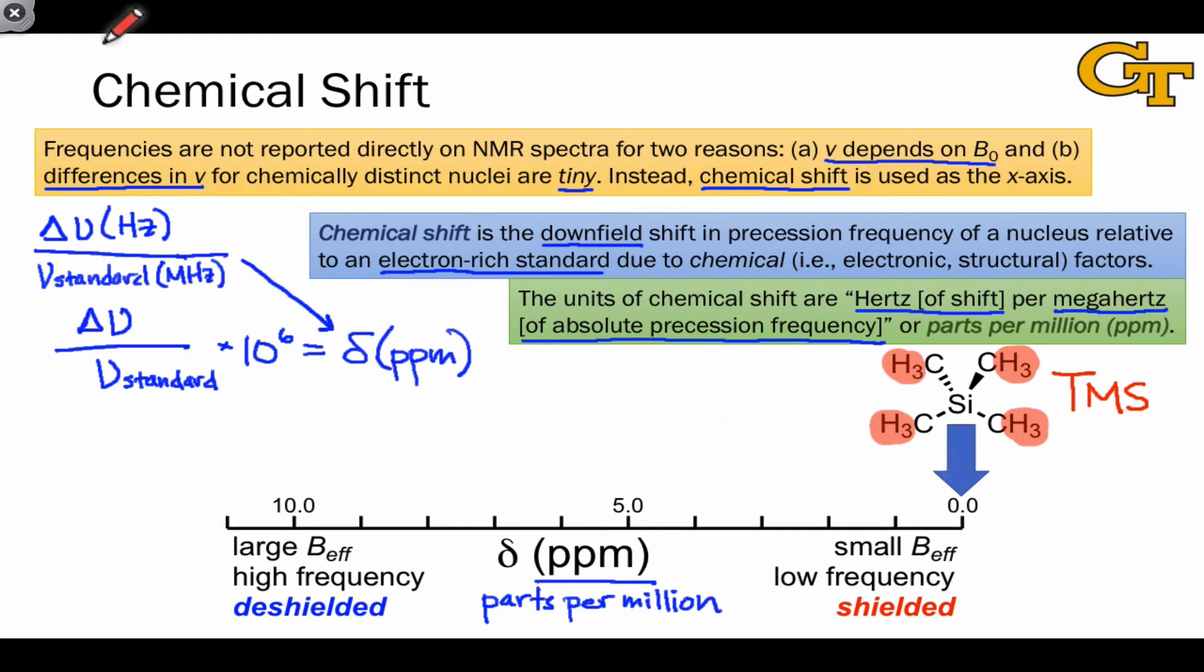As an example of how chemical shift works, let's say we had a signal at 4.0 ppm in an NMR spectrum taken on an instrument for which the precession frequency of TMS was 200 megahertz. This is typical—hundreds of megahertz is standard for ordinary NMR spectrometers.